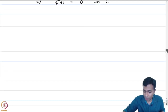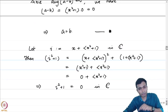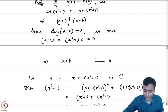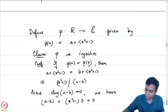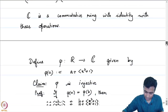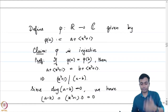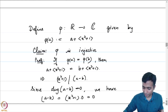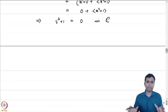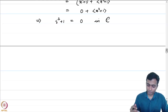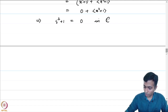So we have both a solution to x squared plus 1 equals 0 and a copy of R sitting inside C. We have addressed two of the aspects in the definition of a field of complex numbers. In fact, we can also say that this is generated by R and i, namely that any element of C can be written as a polynomial expression in i with coefficients in R.